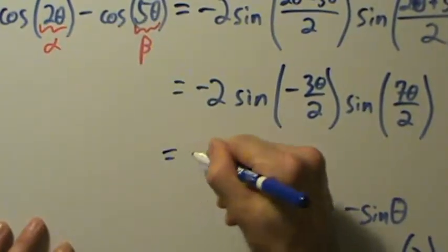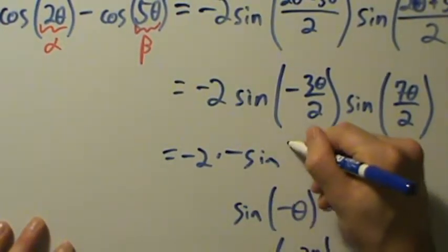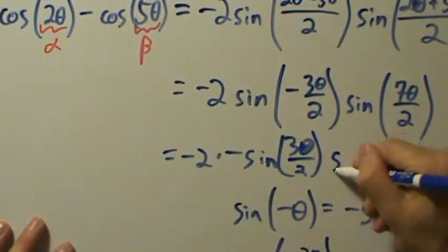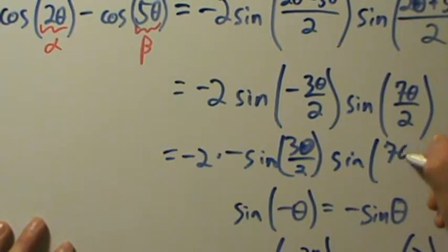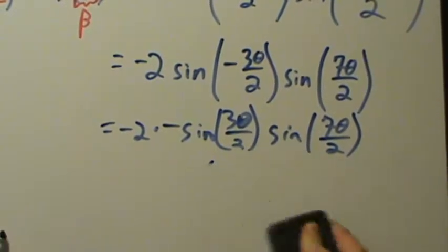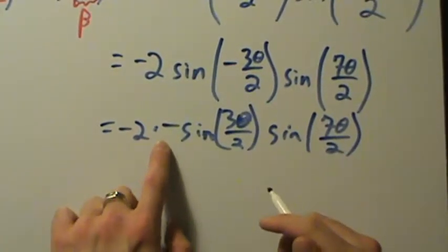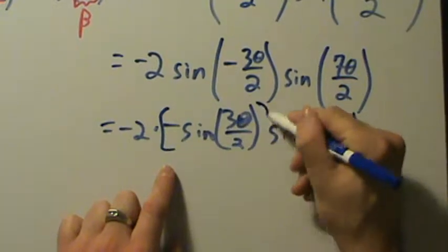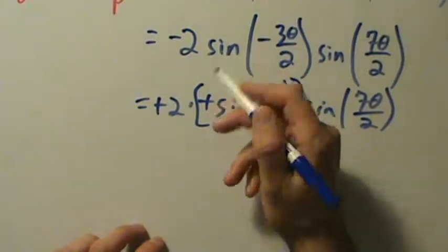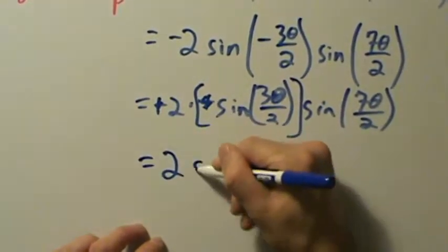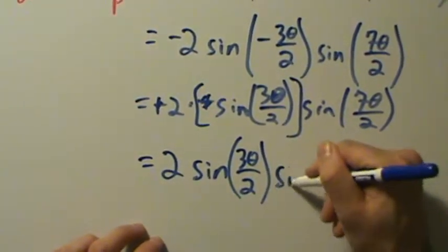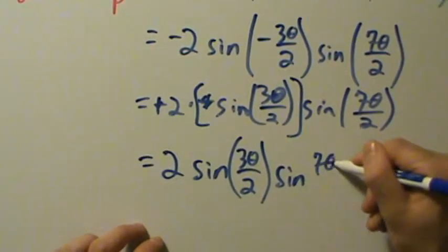So this becomes negative two times negative sine of three theta over two, times the sine of seven theta over two. Negative times a negative — the negatives cancel — so we end up with two times the sine of three theta over two times the sine of seven theta over two.